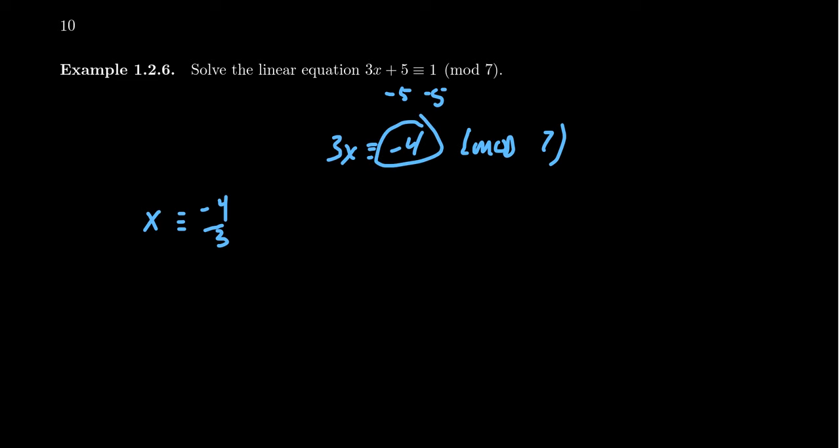But also as negative 4 is not inside the scope of 0 to 6, we could just replace it by adding some multiple of 7 to it. This would give us that 3x is congruent to 3.